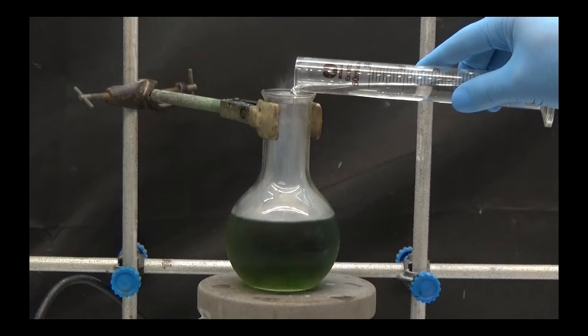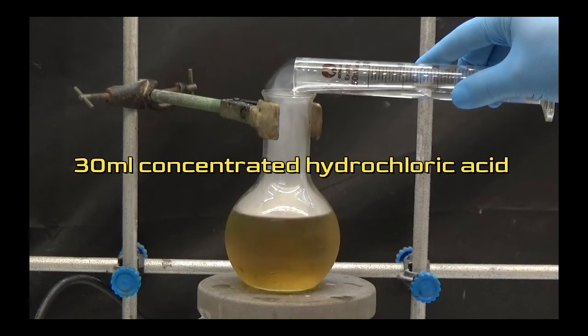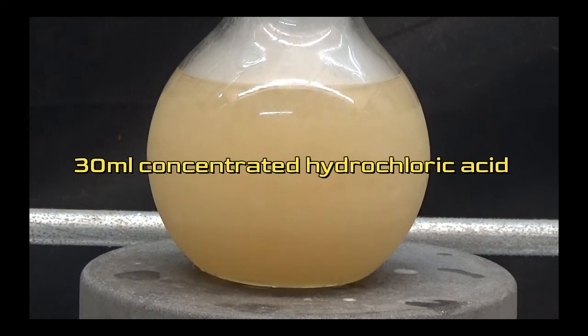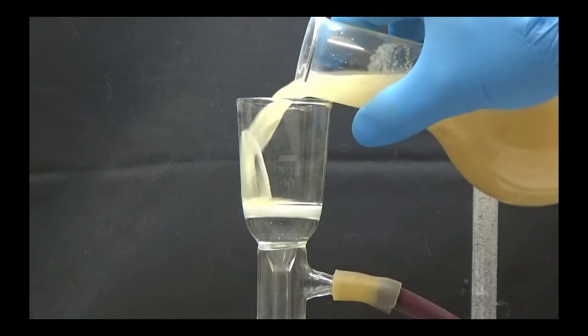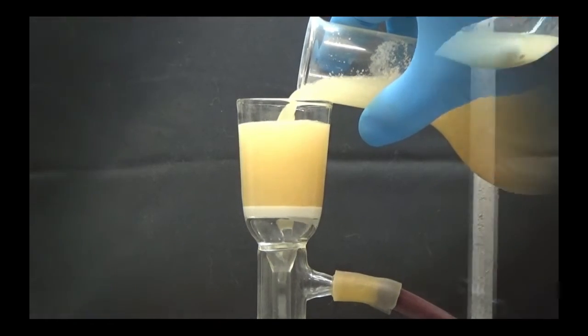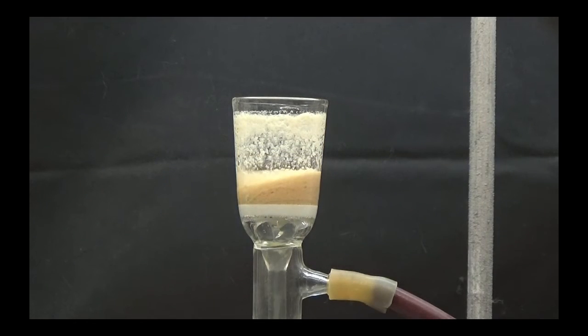With stirring, we add 30ml of concentrated hydrochloric acid and a brown precipitate is produced. Collect the precipitate by suction and dry it in an oven at 60 degrees for 24 hours.